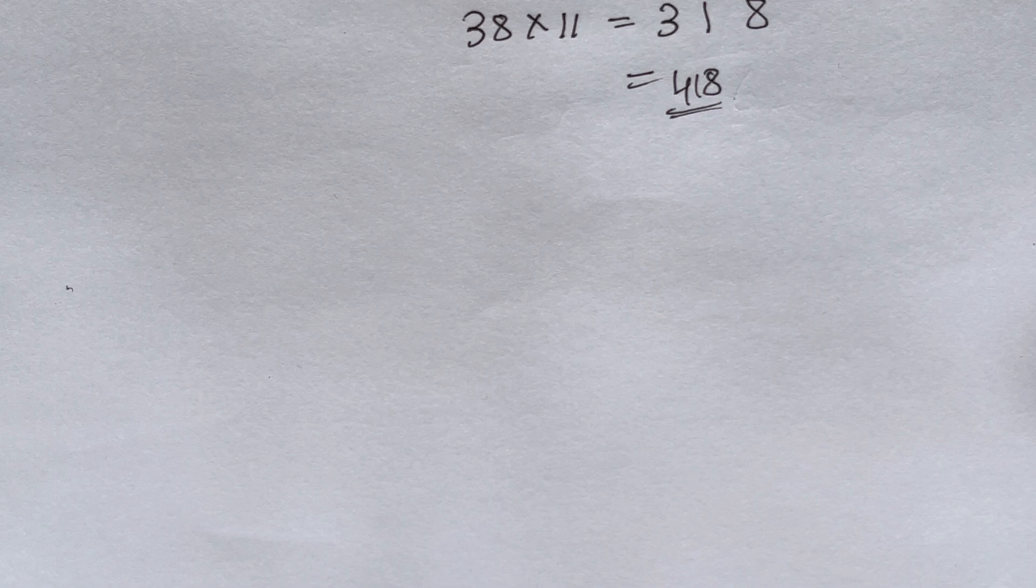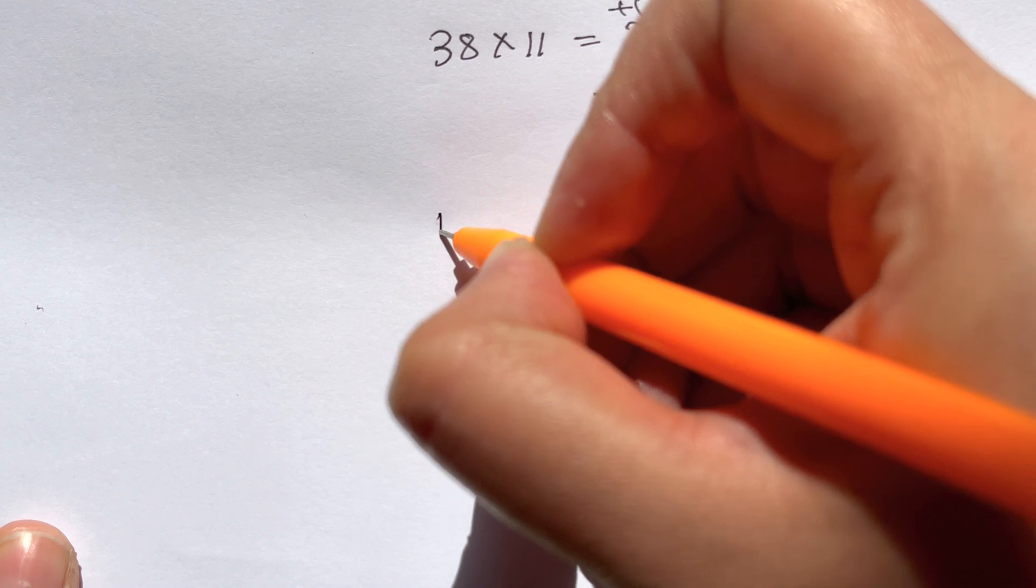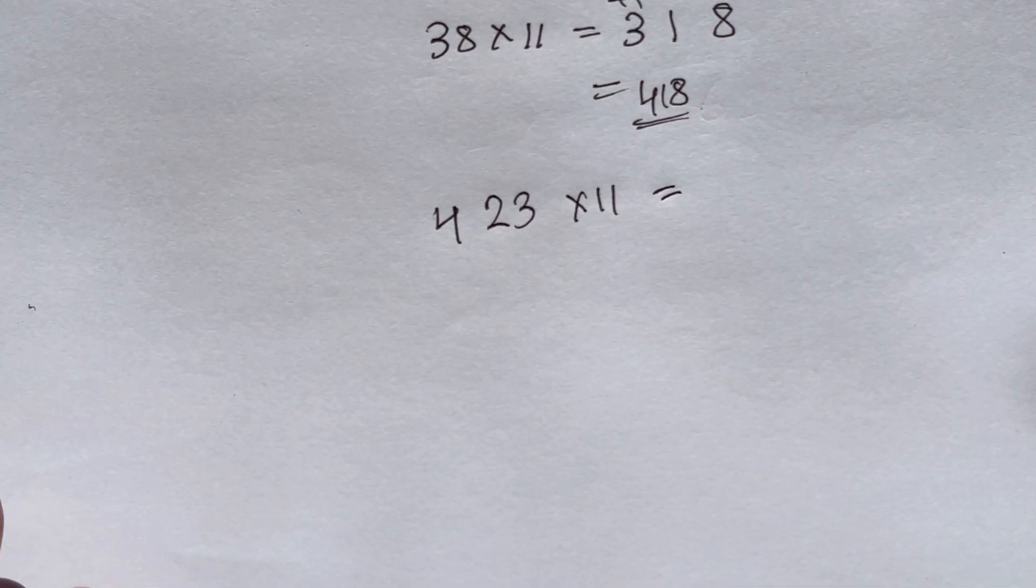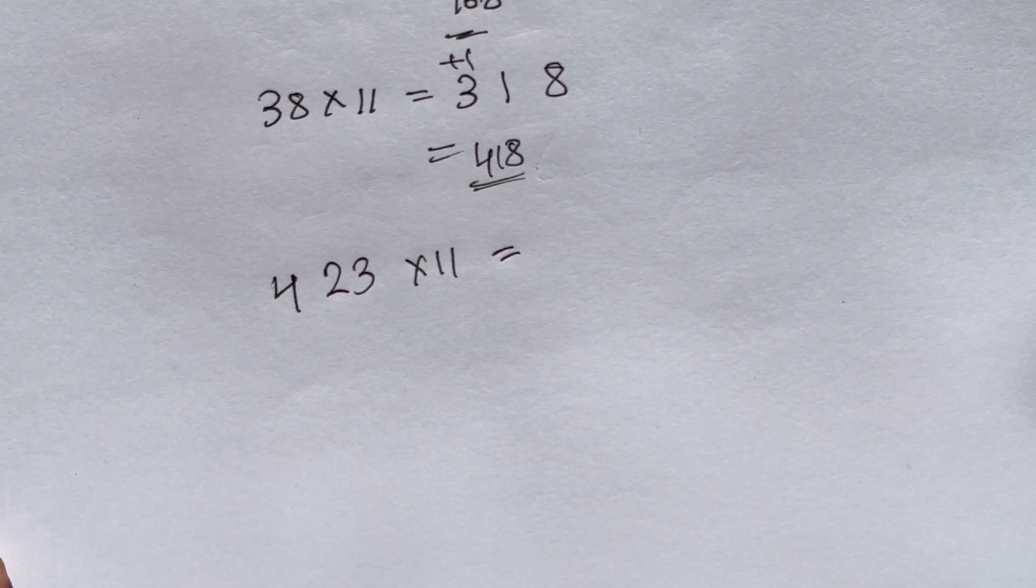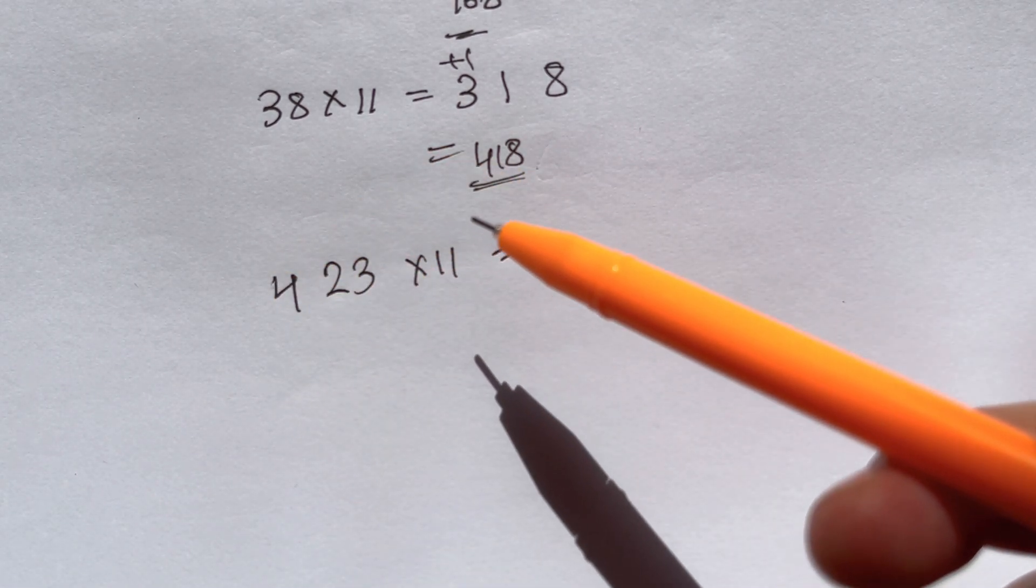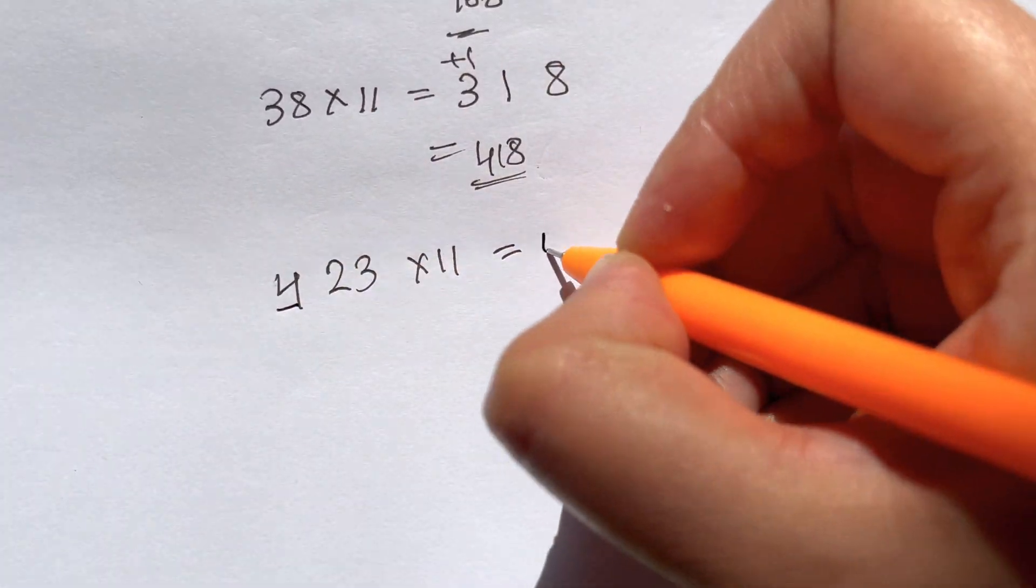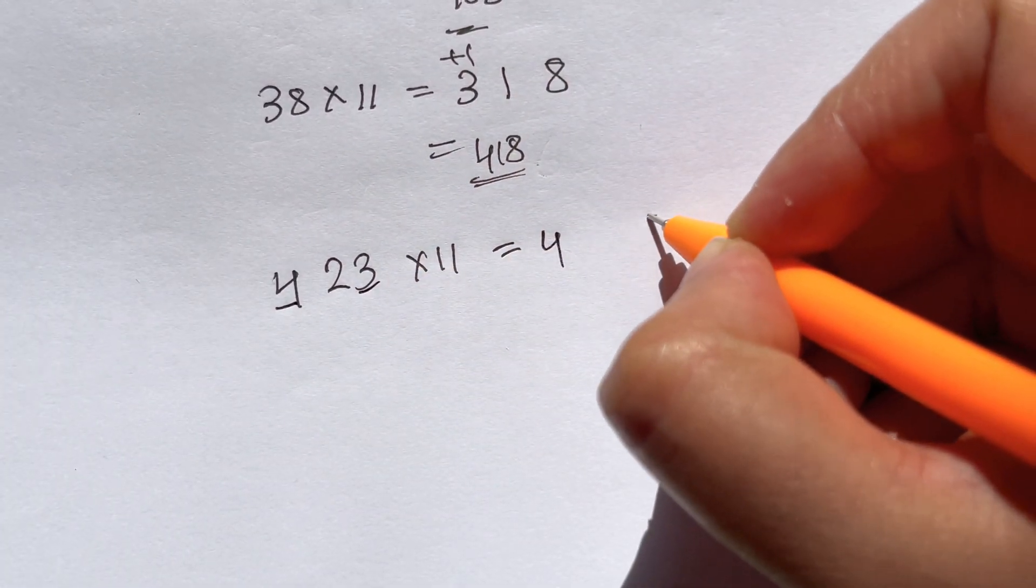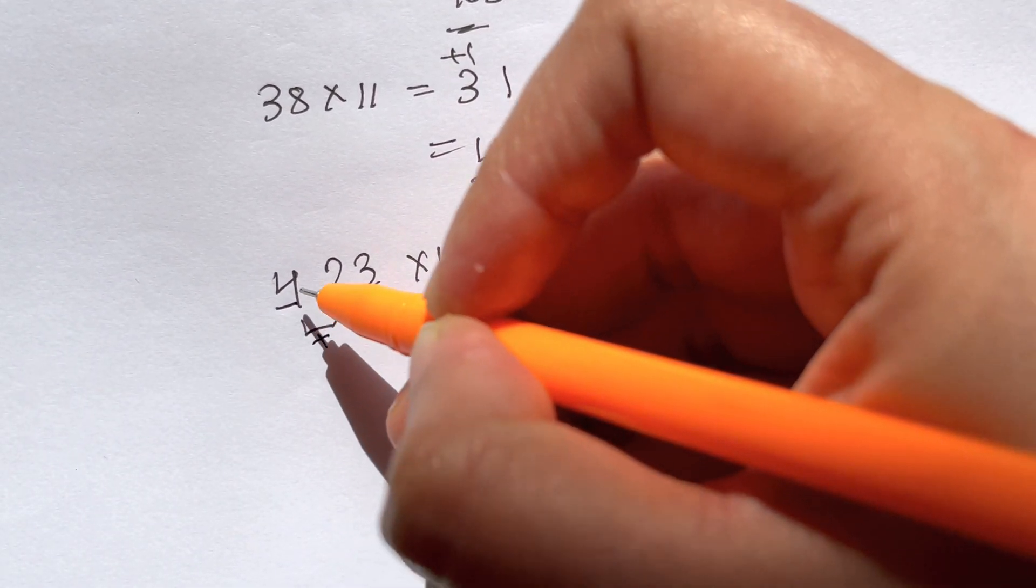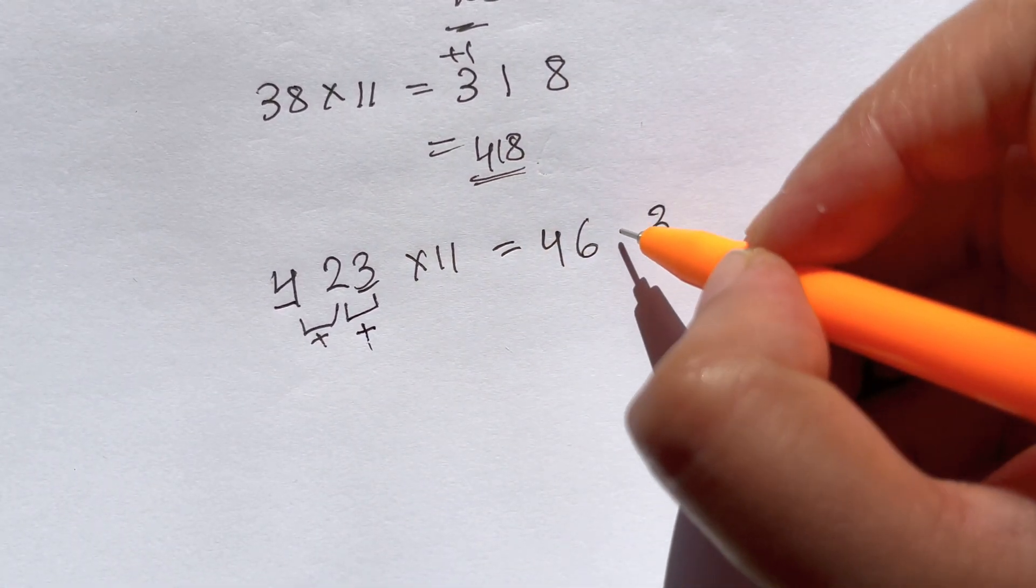Three digit numbers, for example let us take 423 times 11. You just have to do it the same way. Write down 4 and the ending number 3, and then you just go on adding up one by one. 4 plus 2 is 6, 2 plus 3 is 5. So your answer is 4653.